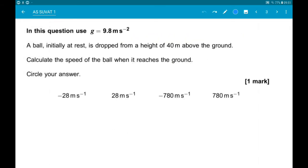So here we are using g as 9.8. A ball, initially at rest, is dropped from a height of 40 metres. We want to calculate the speed of the ball when it hits the ground.